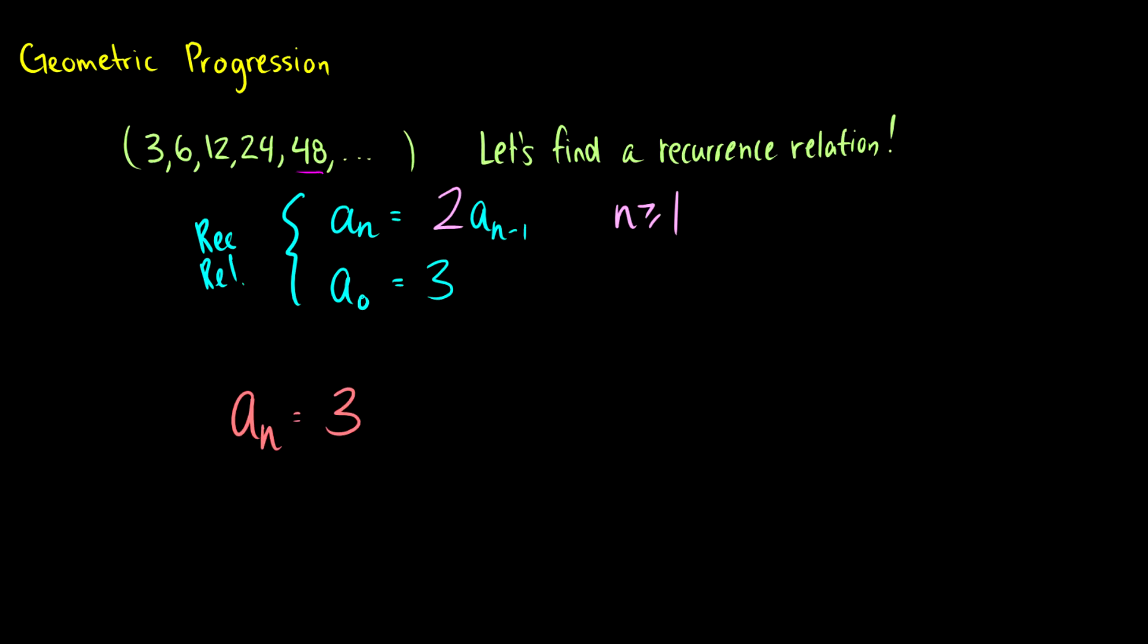So a_1 is going to be 6, a_2 is going to be 12. So why don't we multiply it by 2 to the n? So a_0 is just 3 times 2 to the 0 is 1. That's good.